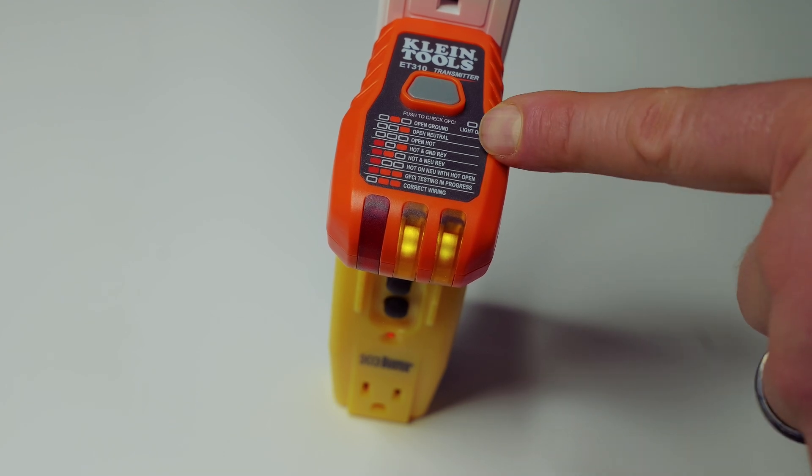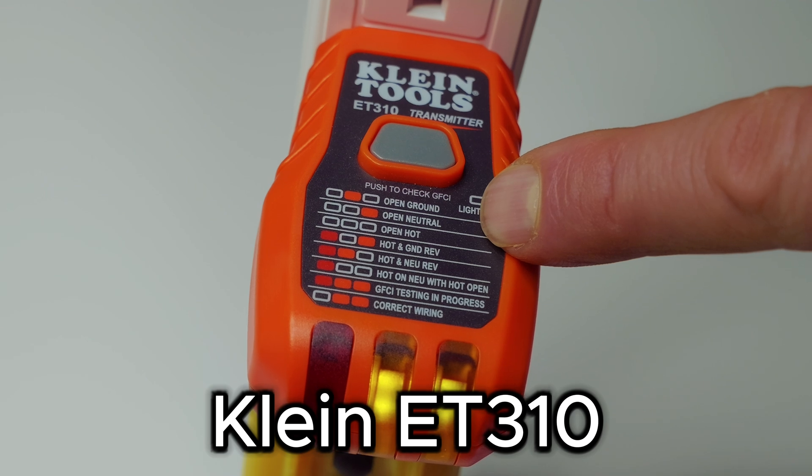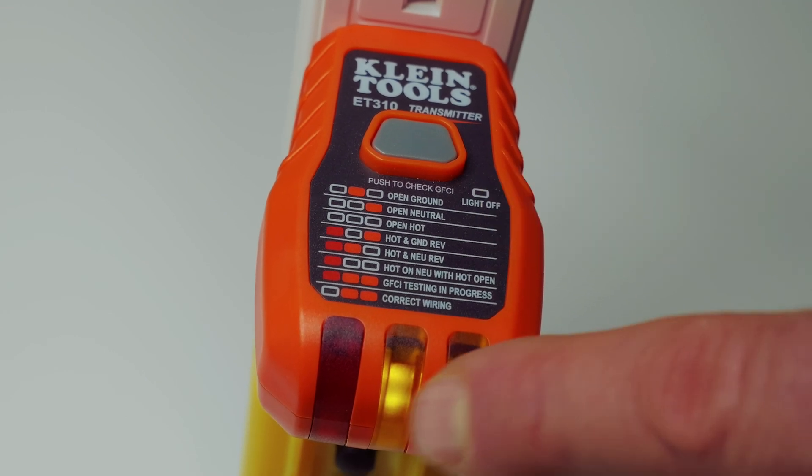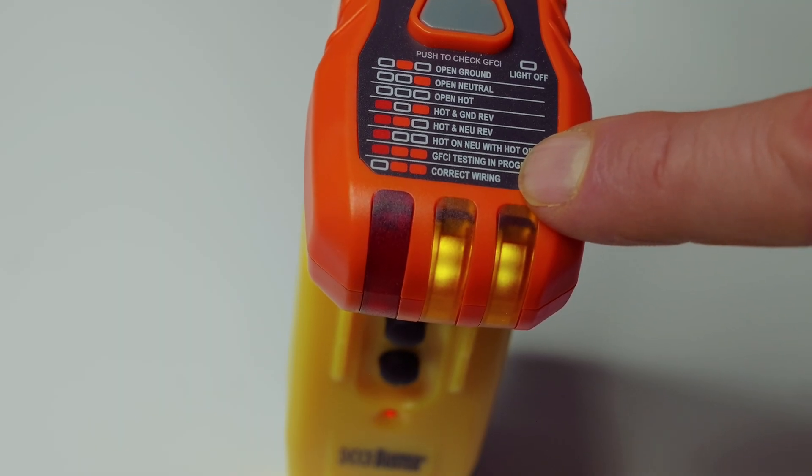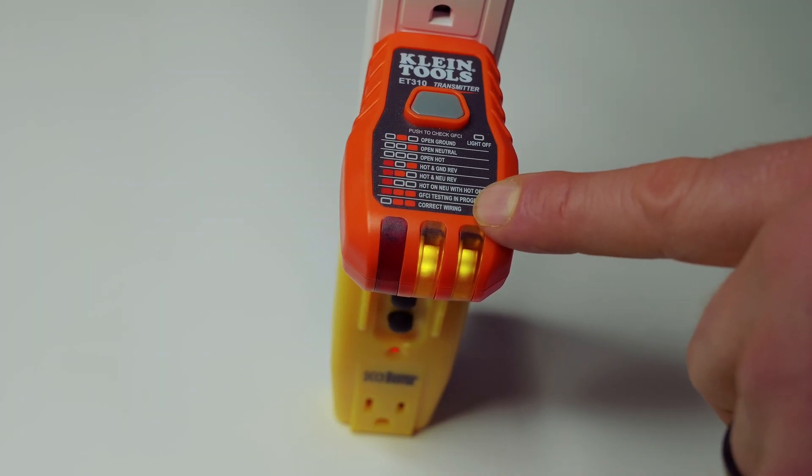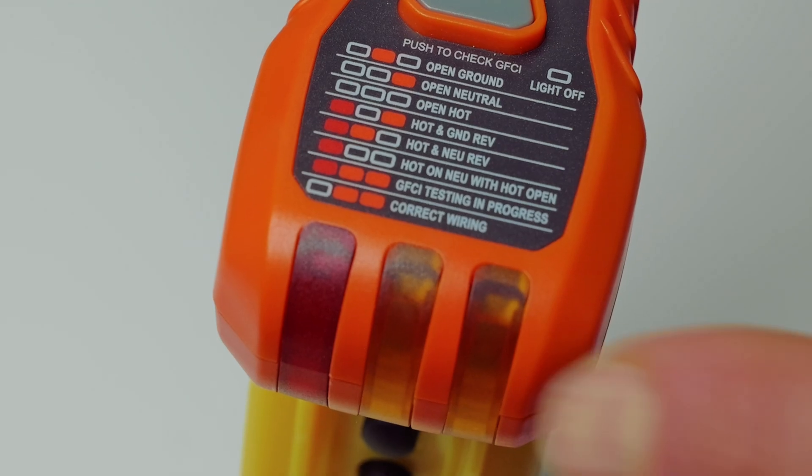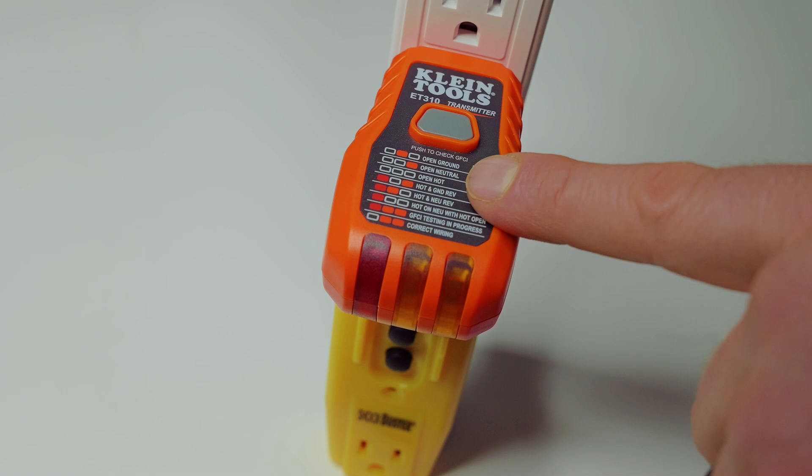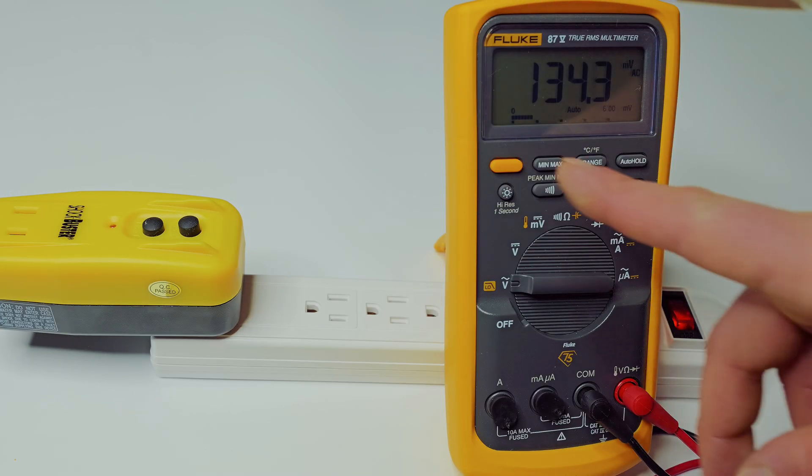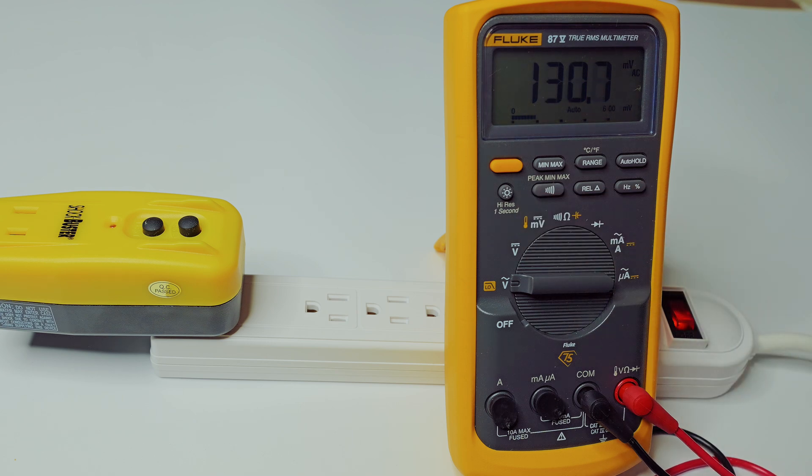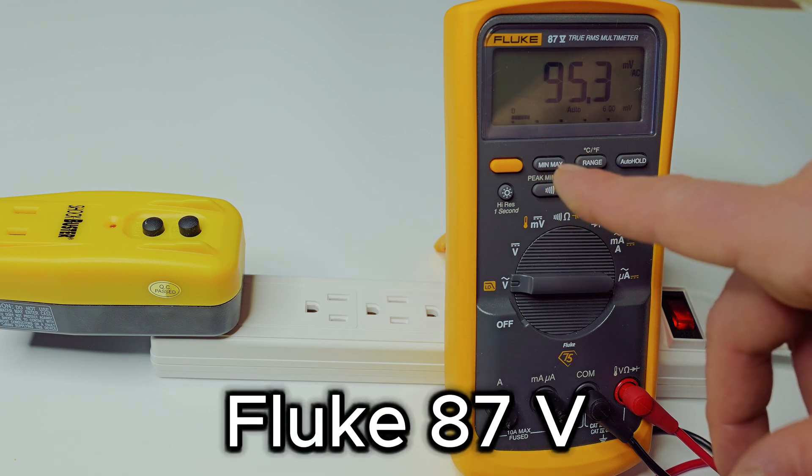Now folks as promised I'll go ahead and show you a few safe alternatives. This is a Klein's tool ET310. What this is doing right now is telling me I have two green lights here which means my circuit is wired correctly and it also tells me that there is power to the strip. Now if I were to turn power off obviously my lights are off. So this is another safe alternative in addition to the non-contact voltage tester pens. Now of course the ultimate way to see if you remove power to the circuit is going to be with a traditional multimeter such as the Fluke 87 Five.